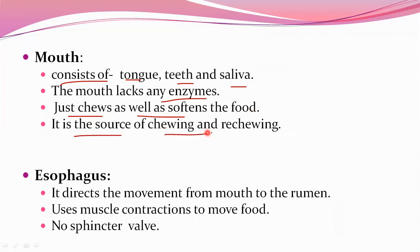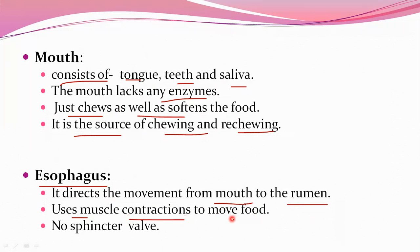The esophagus is also known as the food pipe. It directs movement from the mouth to the rumen and performs the swallowing action through waves of muscle contraction moving the food down. No sphincter valve is present in the esophagus.